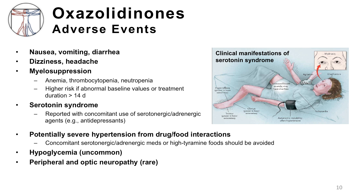Serotonin syndrome may be invoked by the concomitant use of selective serotonin reuptake inhibitors (SSRIs), a class of antidepressants, and linezolid. Linezolid's MAO inhibition might also lead to severe hypertension if administered with other serotonergic or adrenergic medications, or if given with high-tyramine foods such as aged or fermented cheeses, processed meats, or beverages such as beer, as tyramine is a catecholamine-releasing agent. Finally, the oxazolidinones might lead to hypoglycemia, or rarely peripheral and optic neuropathy.